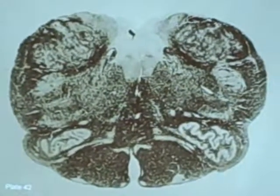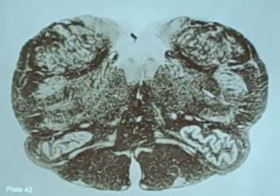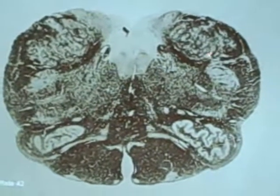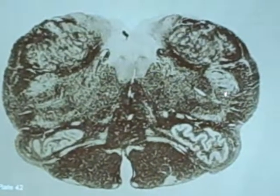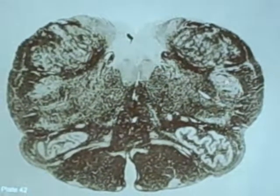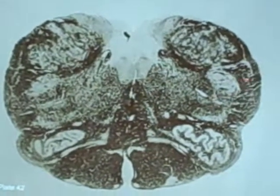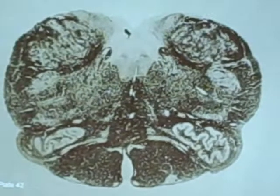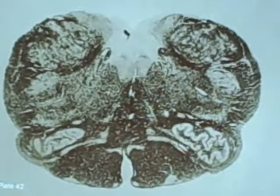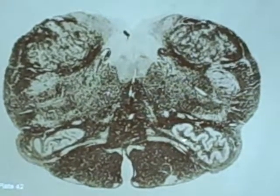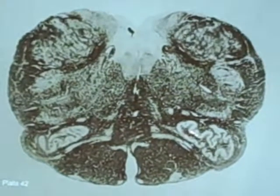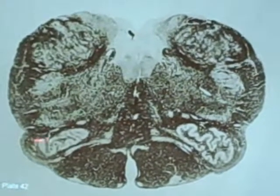We still see a little bit of the nucleus gracilis and spinal trigeminal nucleus. But now we have another nucleus coming in here, which always has a distinctive shape, and this is the inferior olive.